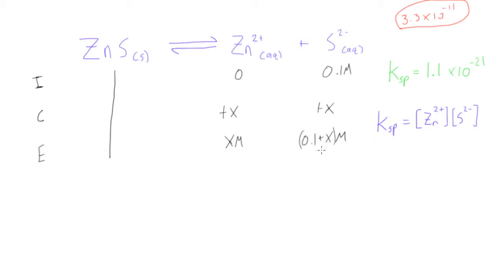Now, 0.1 plus x — if we think about this, the molar solubility in pure water was on the order of 10 to the negative 11. That's about 10 zeros before the 1, so compared to 0.1 it's hardly significant at all. For the purpose of these questions, we can say 0.1 plus x is more or less equal to 0.1. You can usually take this shortcut as long as the x value is about a thousand times smaller than the constant value.